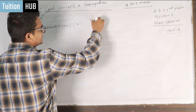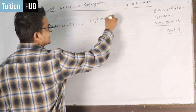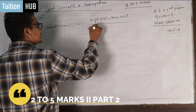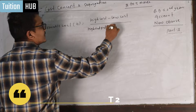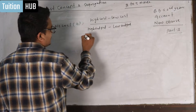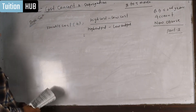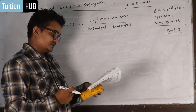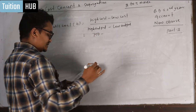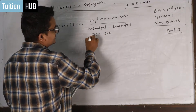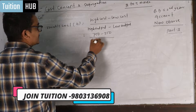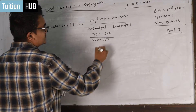The variable cost is high cost minus low cost upon high output minus low output.